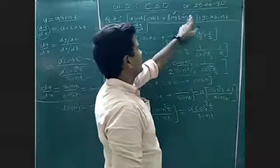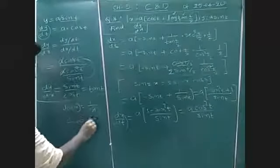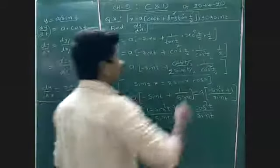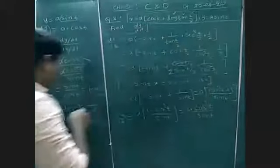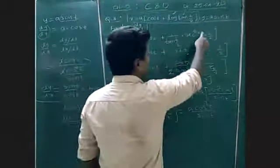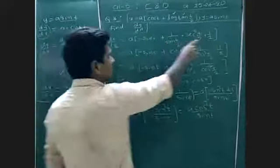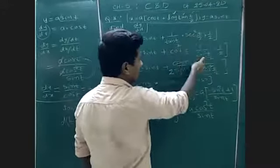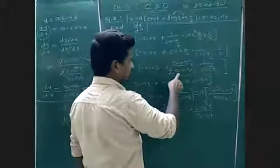Next we can differentiate tan(t/2). Tan x derivative is sec² and here t by 2, the derivative of t by 2 with respect to t is clearly 1 by 2. So this tan — 1 by tan can be written as cot. Sec² is 1 by cos², written as it is. Now cos is cos over sin.